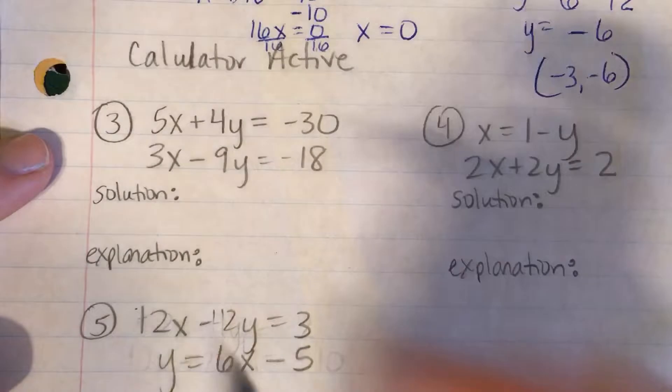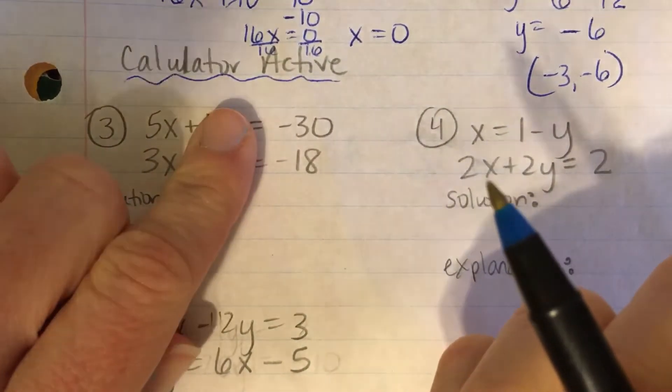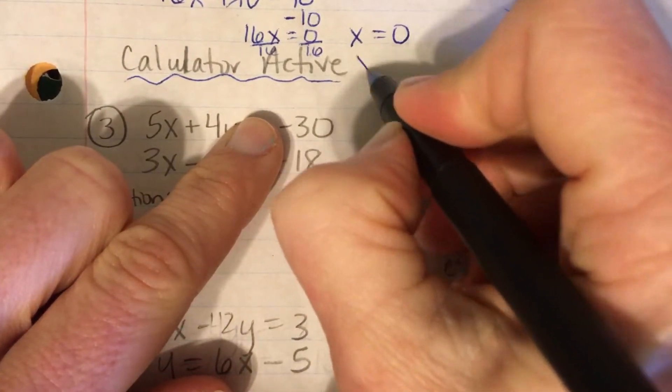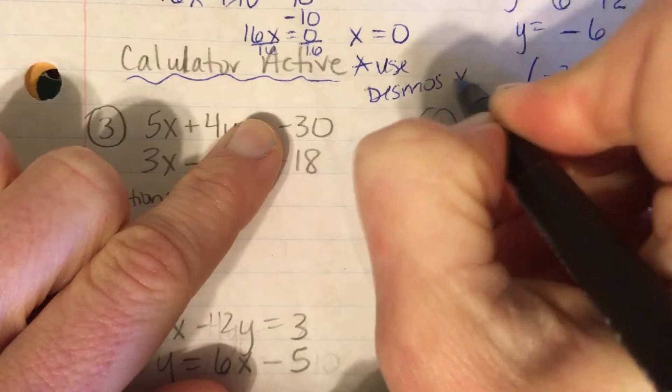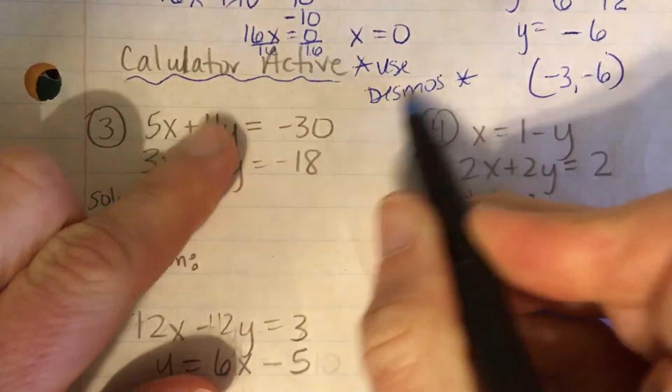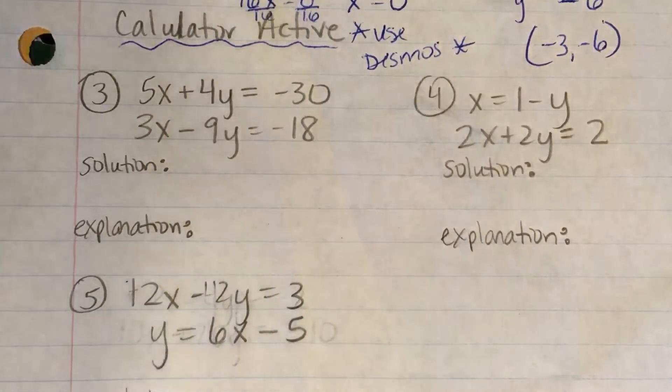Alright, the last three questions are calculator active. Anytime you see calculator active, that automatically means you can use Desmos. You don't need to ask me. If it says calculator active, you can use Desmos. Alright, so let's type these into Desmos.